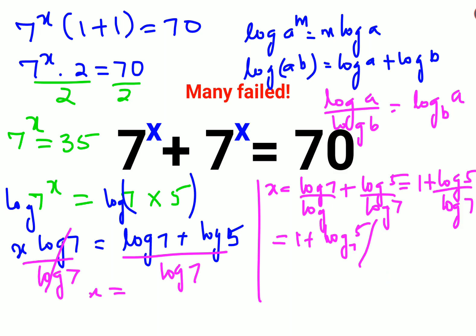Another answer: if they have provided you with log tables, then we can put the value of log 5, that is 0.699, upon log 7, which is 0.845. So we get basically 1 plus, when you do the division, you get 0.827. That is nothing but 1.827.